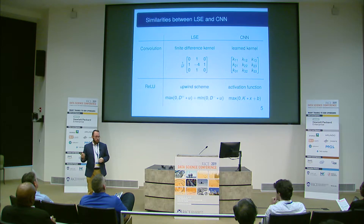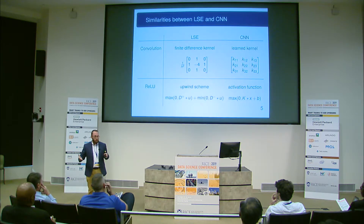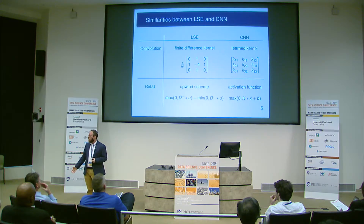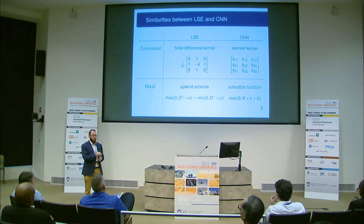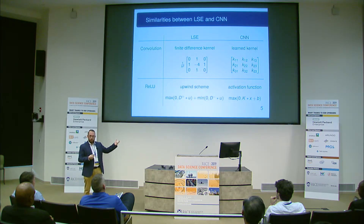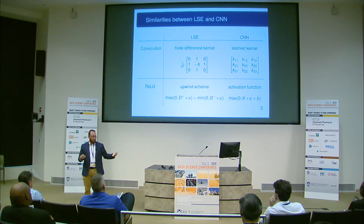Similarly, with convolutional networks we have nonlinear functions — I'll pick on ReLU, which almost everyone uses. That's our activation function: apply the convolution, add the bias, take the maximum with zero. An upwind finite difference scheme can be written in a very similar way: two slightly different finite difference stencils, one weighting information on each side, passed through maxes and mins. You can rewrite mins as negative maxes, so this looks very similar to activation functions in neural networks.